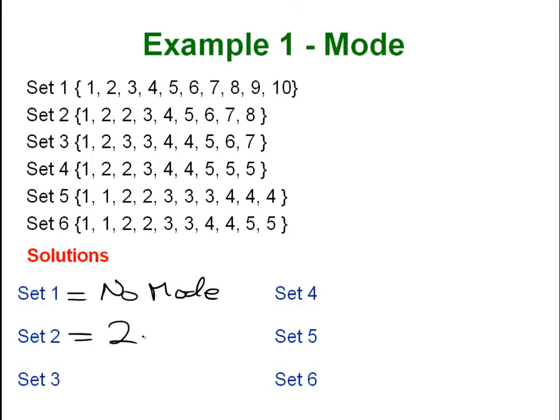What about set 3? The answer is not 3 and a half because both 3 and 4 appear most frequently, so you write them both. You have two modes in that one. Let's move on to set 4. Hopefully you noticed that there were three 5's. So even though the 4 and the 2 showed up twice, the 5 showed up 3 times. So it is the most frequent, so it is the mode. Take that knowledge and apply it to set 5. Again 3 and 4.